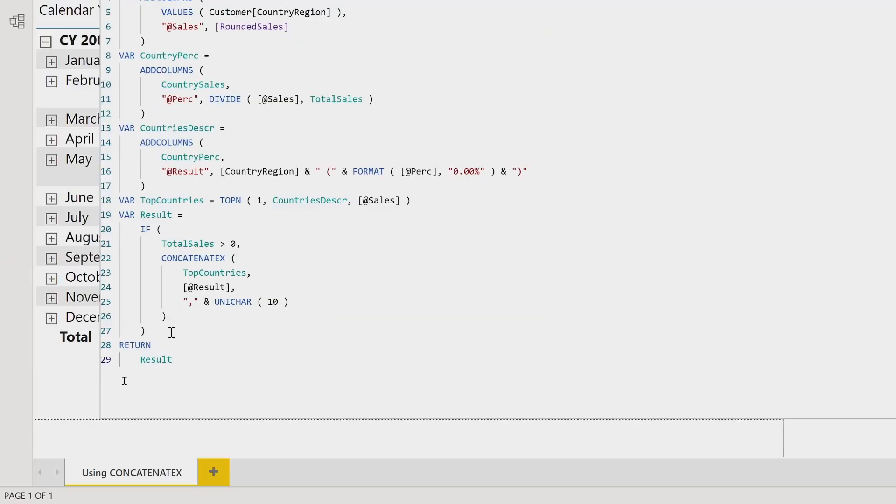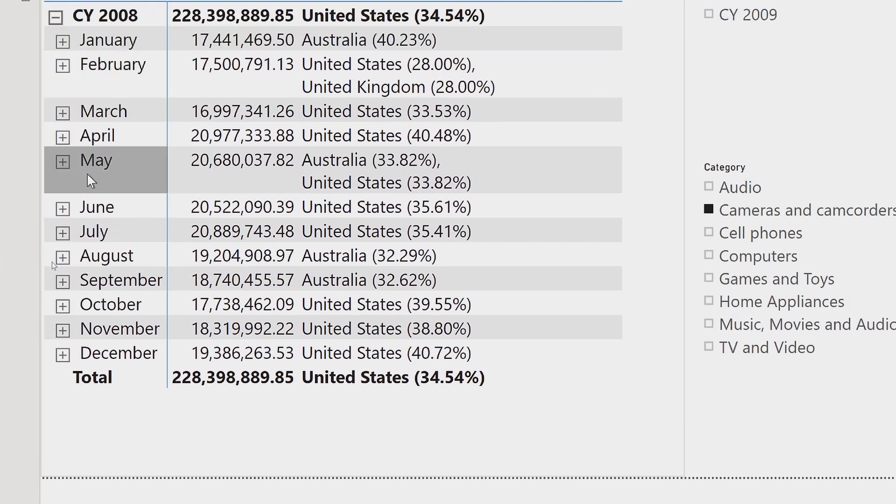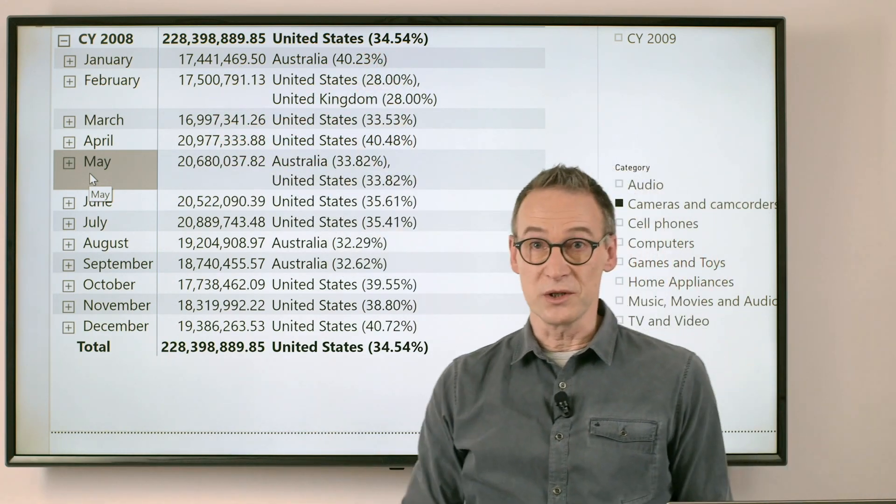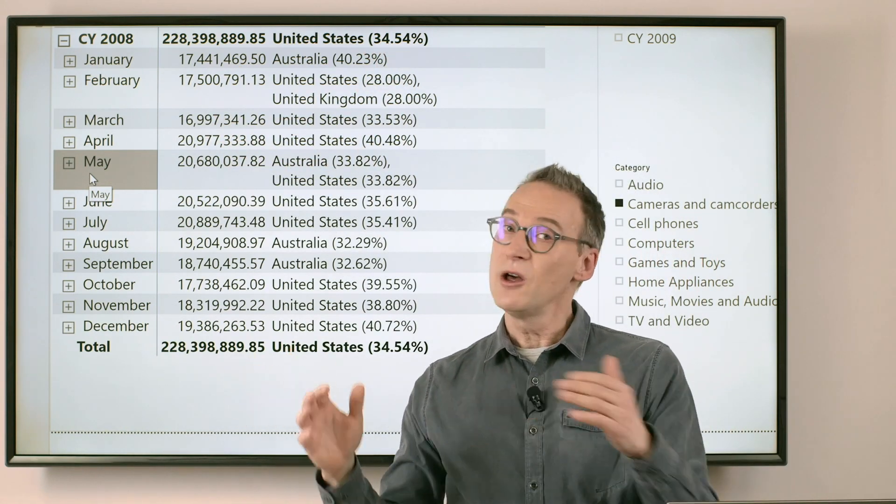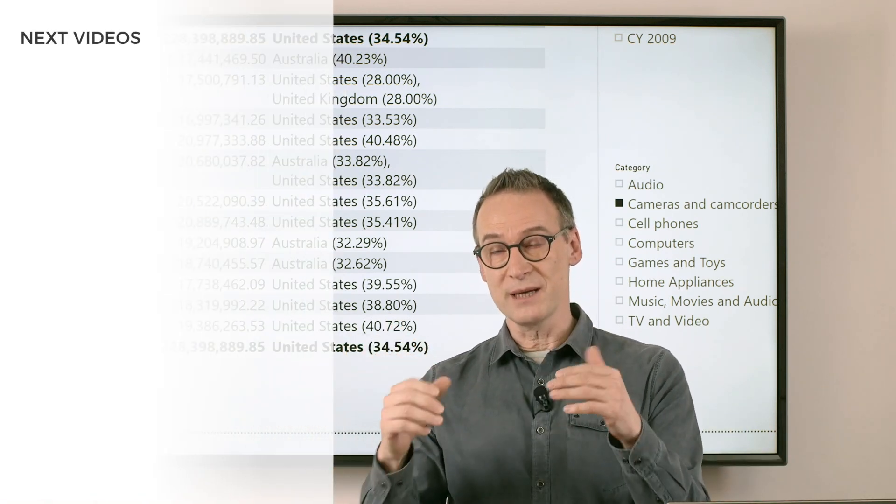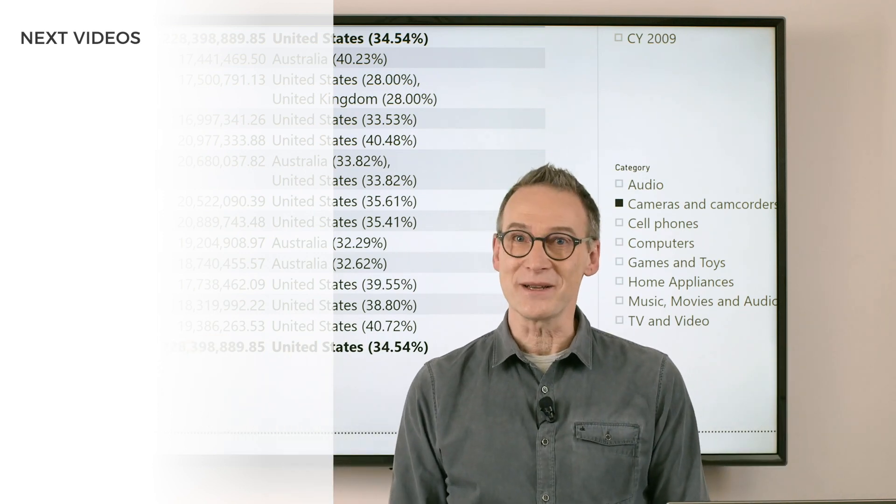The final result, as you see, is quite a nice report that shows the year, the sales, and the top seller. Of course, you can use it for whatever kind of top 10, or whenever you need to return rows from a table, concatenate them as a string, no matter how many rows are there. Have fun with DAX.